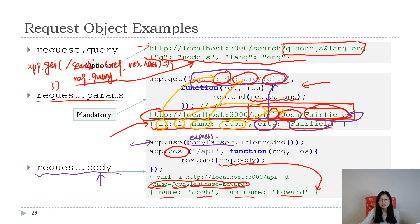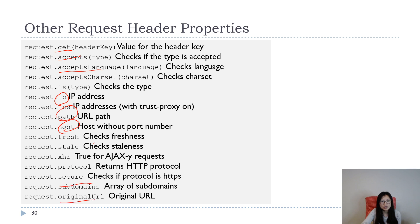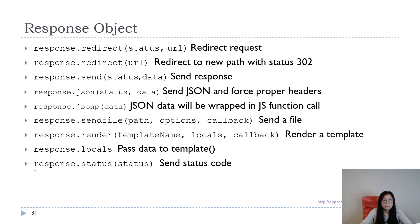In the request object you can also get a lot of header information, such as the IP address, path, host, accepted language, domain, original URL, protocol, and whether it's an AJAX request or not. You can search the Express API documentation to find the specific header properties you need.